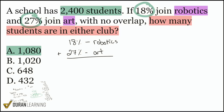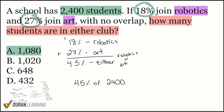This is actually pretty neat. What is 18 plus 27? 8 plus 7 is 15, carry the 1. 1 plus 2 is 3, carry the 1 is 4. So 45% is going to be either robotics or art. Now we're going to do 45% of the 2,400, and we can use that same mental math trick — instead of 0.45, just make this a 24. So we have 45 times 24.